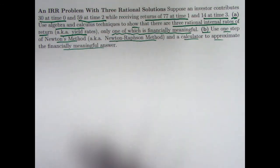And continuing to review algebra and calculus, we'll use one step of Newton's method, also known as the Newton-Raphson method, and a calculator to approximate the financially meaningful answer. In both situations we're actually going to use the calculator. In watching this video, you're going to want to have your calculator ready, because to save time I'm just going to say what certain answers are, and you are going to want to pause the video and check that I'm correct.